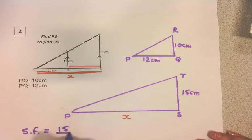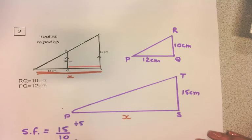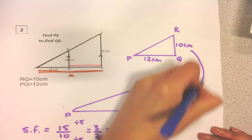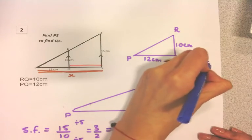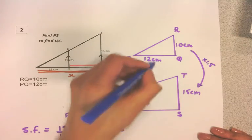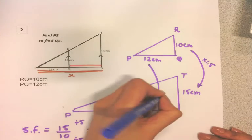So 15 divided by 10—I'm going to divide the top and bottom by 5. That's 3 over 2, so the scale factor is 1.5. To get from 10 to 15, I multiply by 1.5. That means I can find length X by doing 12 times 1.5.